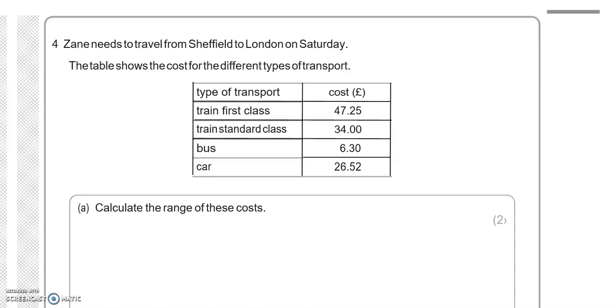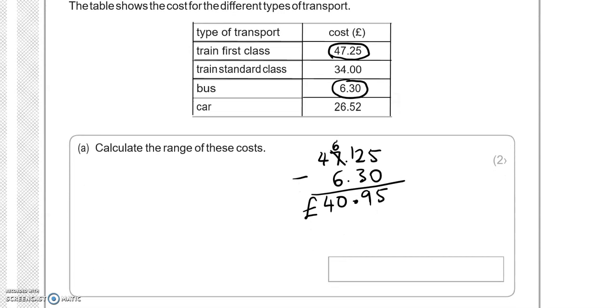So the highest of these amounts is £47.25 and the lowest is £6.30. So 47.25 take away 6.30. 5 take away 0 is 5. 2 take away 3, we're going to need to borrow 1 to make this 12, take away 3 to give us 9. 6 take away 6 is 0. 4 take away 0 is 4. So £40.95 is the difference or the range.